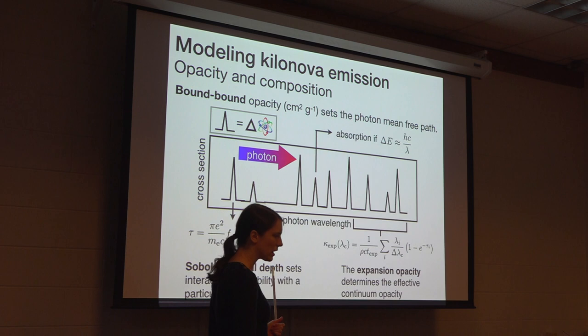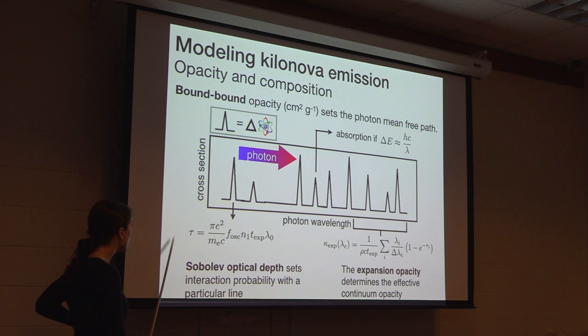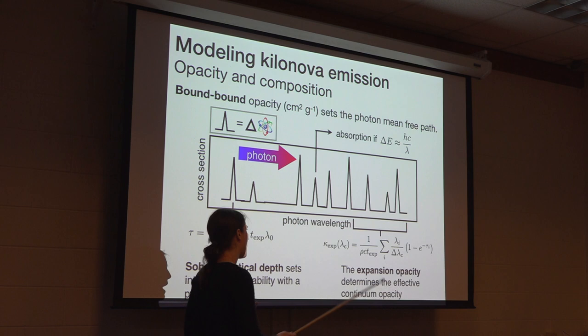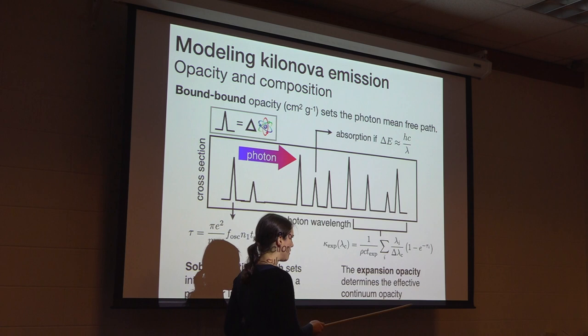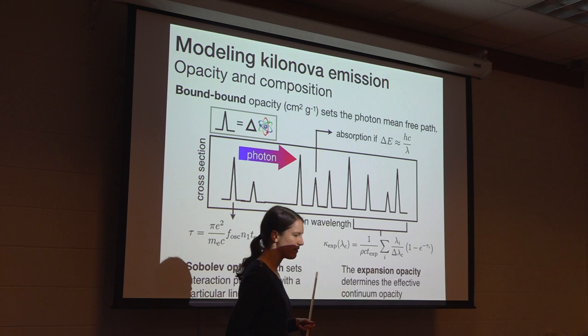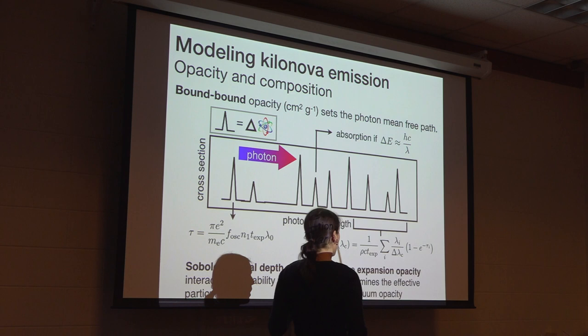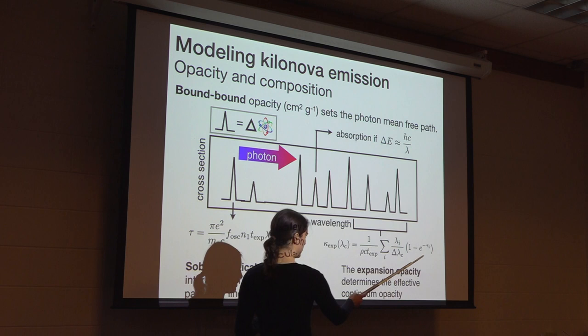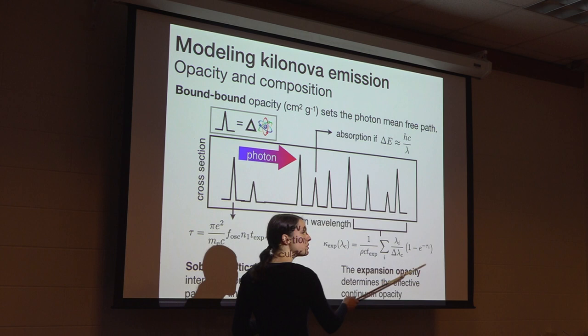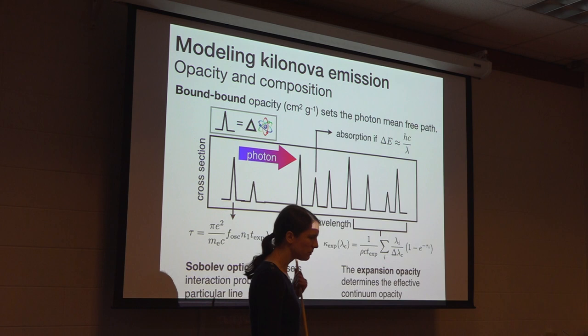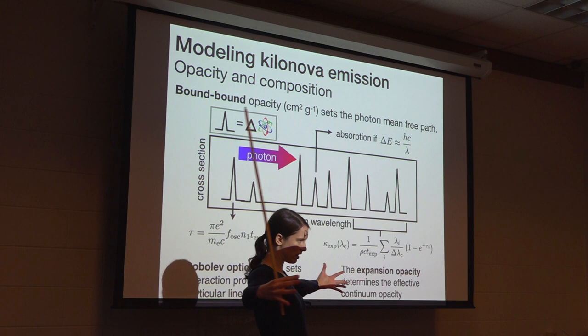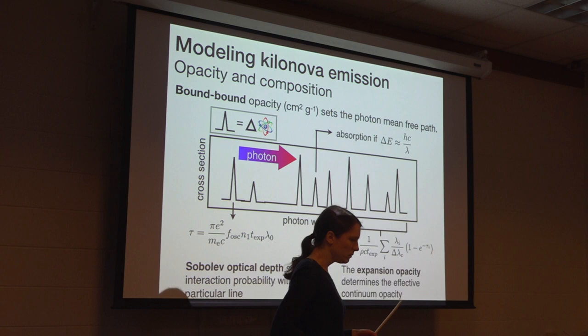To account for this expansion effect we use the expansion opacity formalism. The probability for a photon to interact with any particular line is given by the Sobolev optical depth, and we model the continuum opacity using the expansion opacity expression — a way of aggregating the effect of multiple lines within small discrete wavelength bins. Importantly, the overall opacity has a nonlinear dependence on the optical depth of any particular line: the optical depth appears in an exponential, so the effect of any single strong line is capped at one due to the e^{-τ} term.